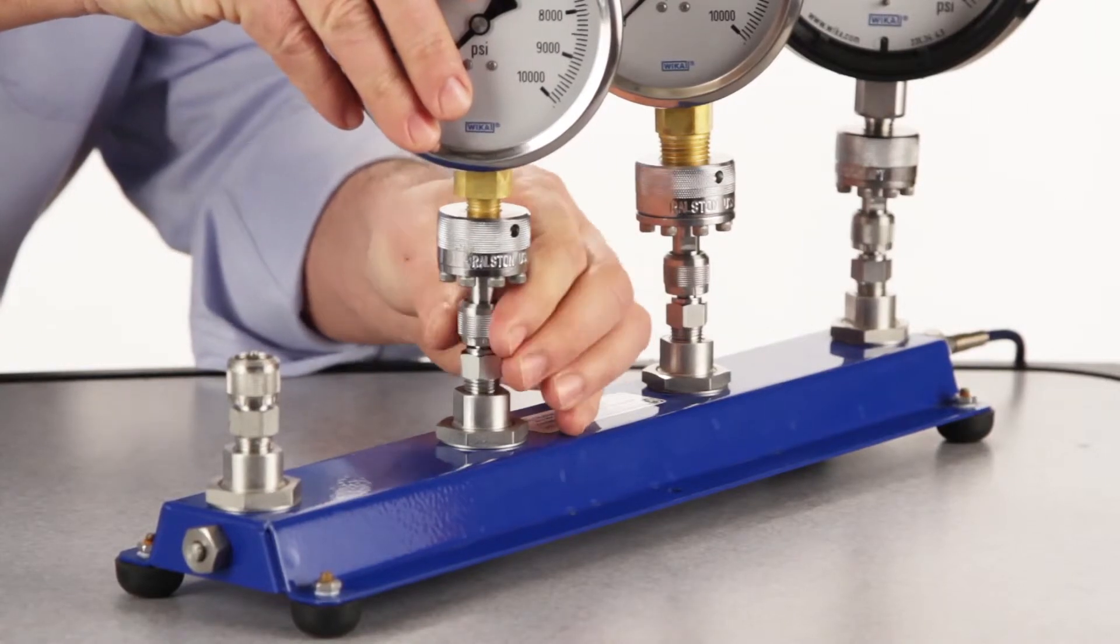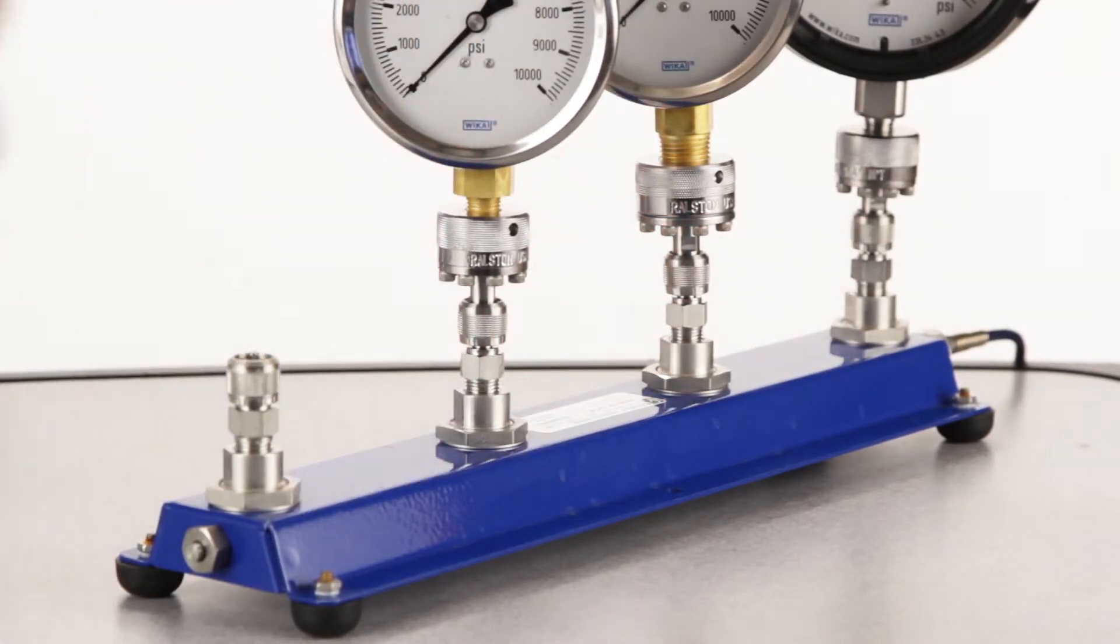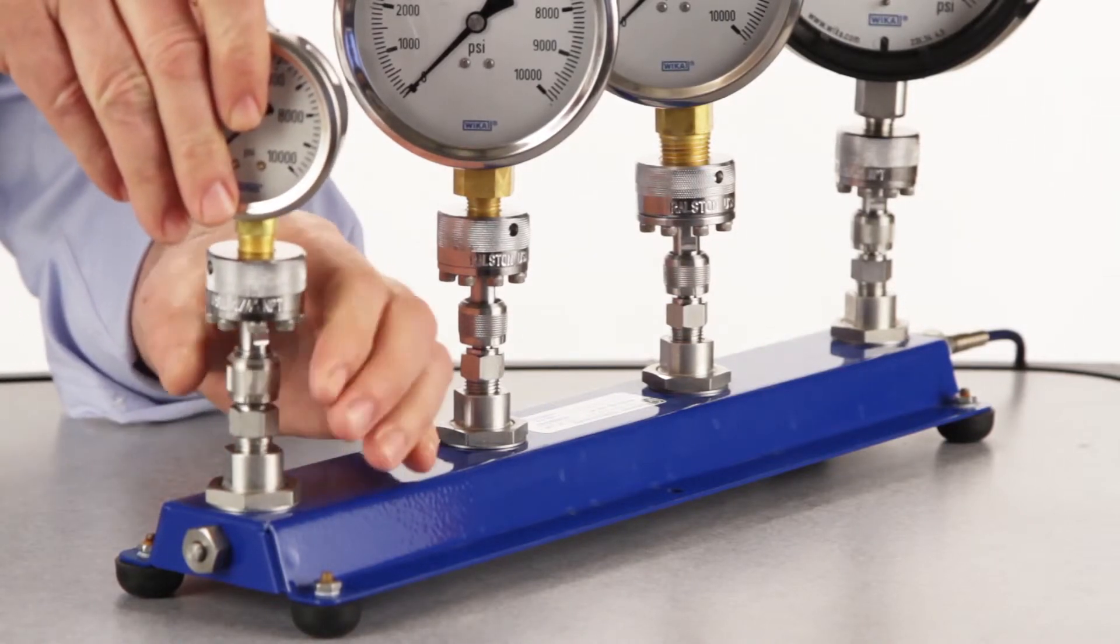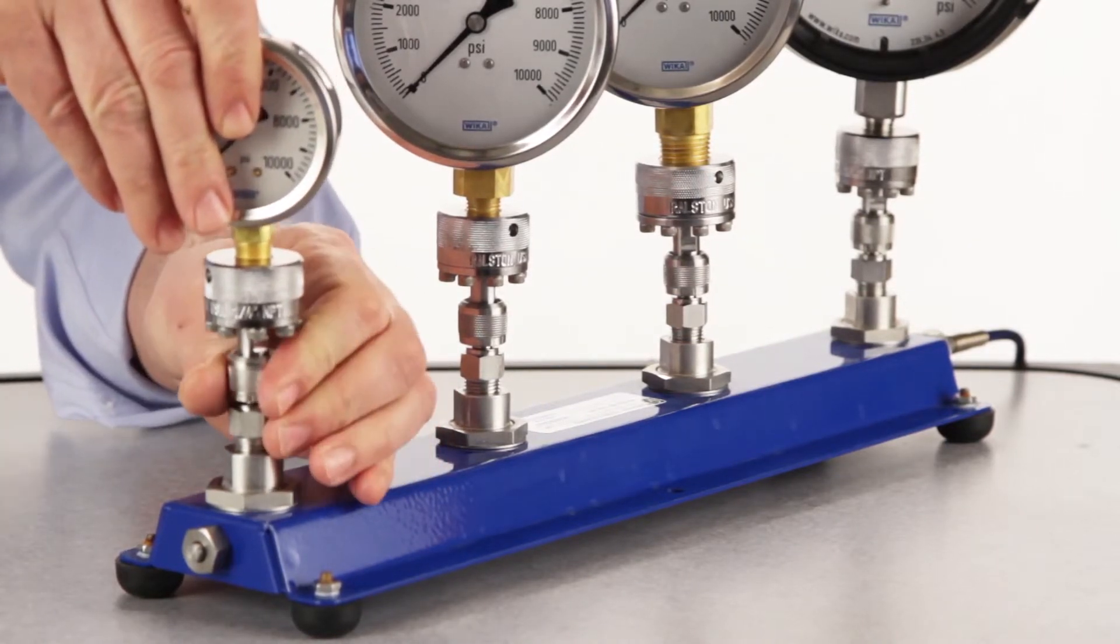The Quick Test XT connection lets you perform calibrations on pressure instruments with a wide variety of process connection styles and sizes, and switch effortlessly between them, all without using a wrench.